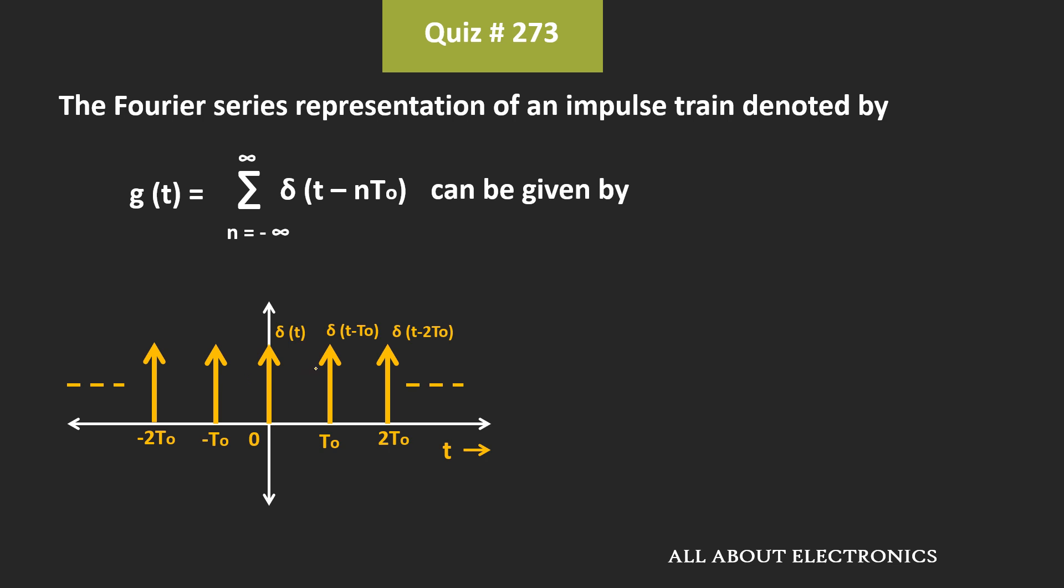And similarly, for n equals minus 1, we get the time-shifted unit impulse signal at t equals minus t0. So if we put the different values of n, then we get the impulse train with a time period of t0.